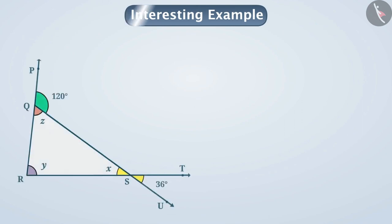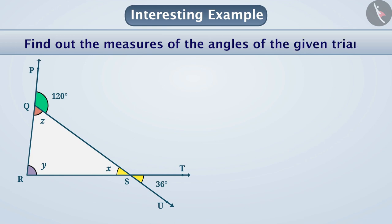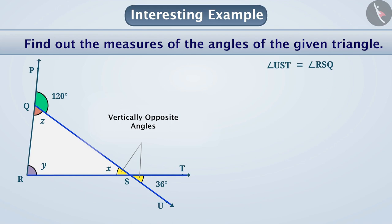Let us see an interesting example. Find out the measures of the angles of the given triangle. Here, angle UST and angle RSQ are vertically opposite angles. Therefore, both are equal, which means we get x equals 36 degrees.